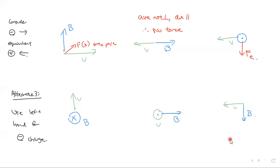Using your left hand this time, your velocity is going up, so your thumb is pointing up. Your fingers are pointing into the page. So that means the force here on the electron is going to the right.